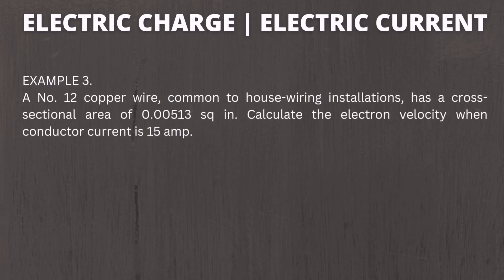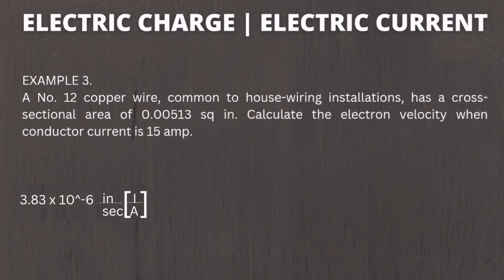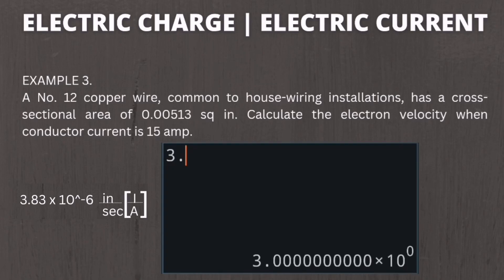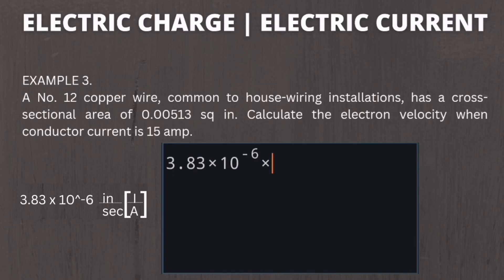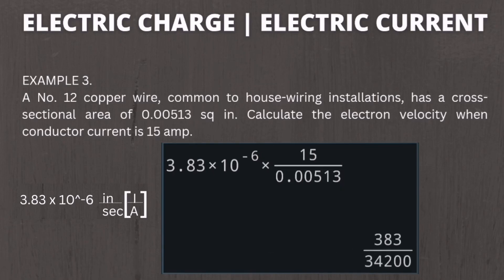Example number three: a number 12 copper wire common to house wiring installations has a cross-sectional area of 0.00513 square inch. Calculate the electron velocity when the conductor current is 15 amperes. Substituting into the formula — 3.83 times 10 raised to negative 6 times the current divided by the cross-sectional area — the answer is 0.0112 inch per second.